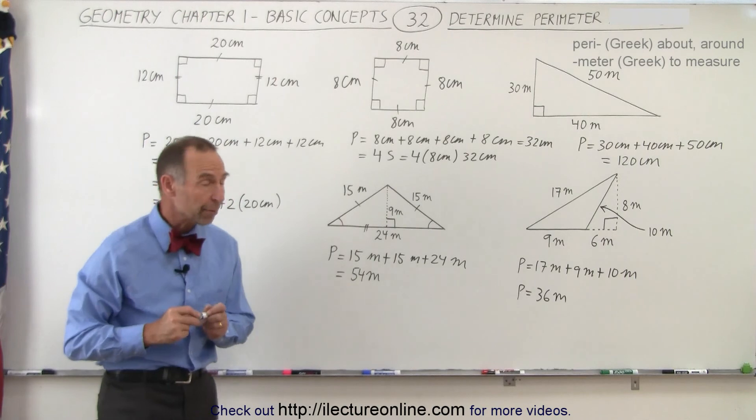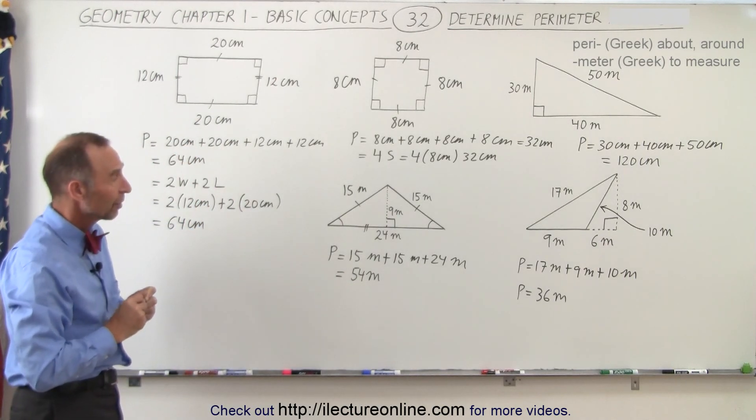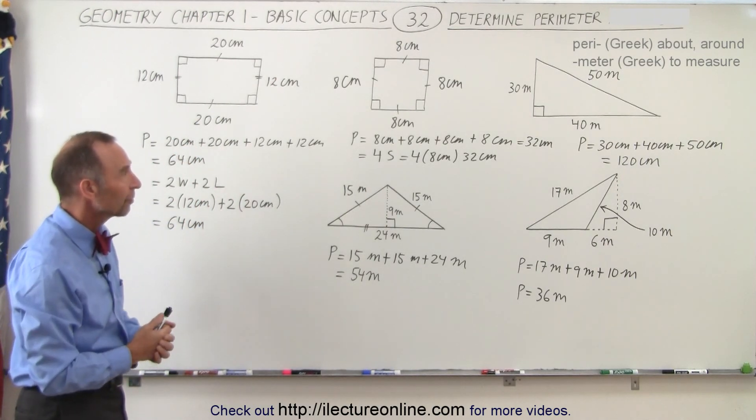And that's how we find the perimeter of these five polygons or these five shapes.